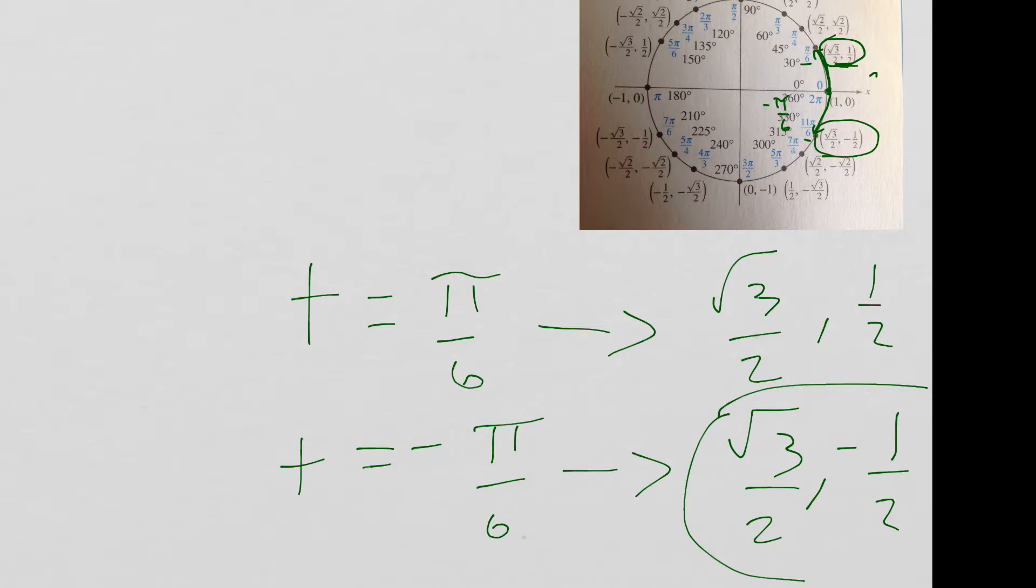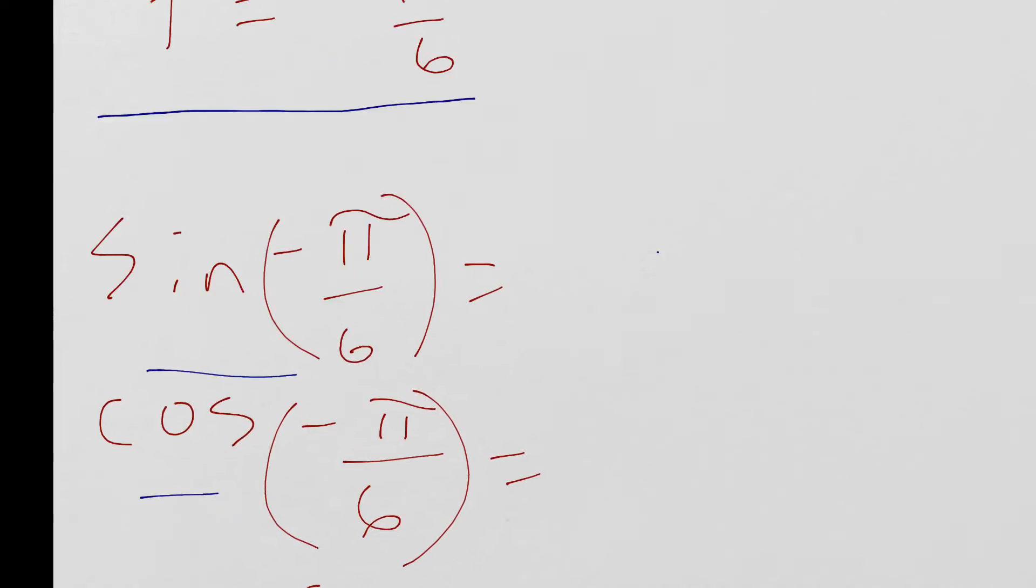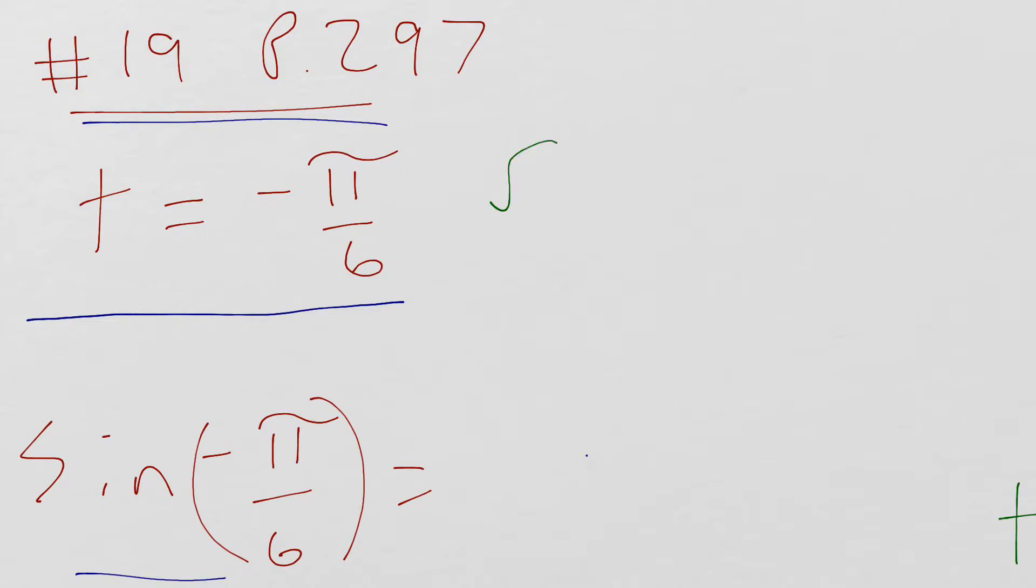So this is the point we're going to use to find our sine, cosine, and tangent. We're going to use the point, square root of 3 over 2, negative 1 half.